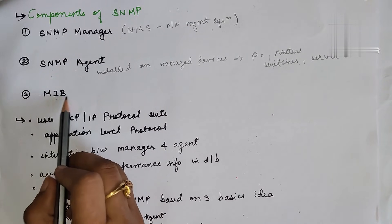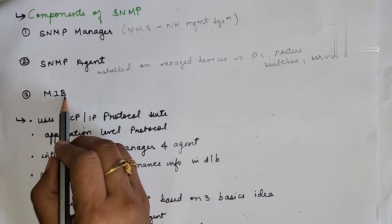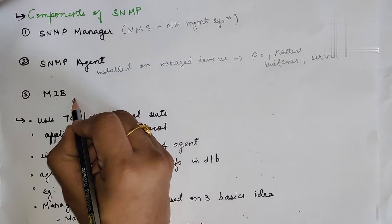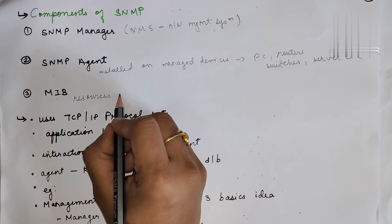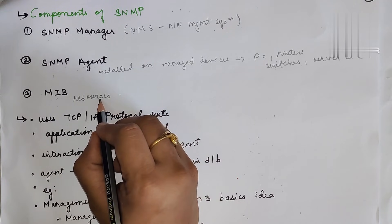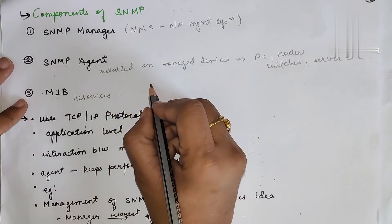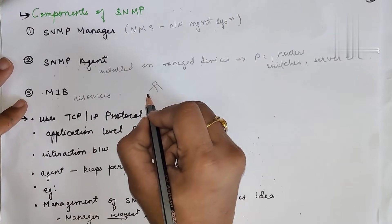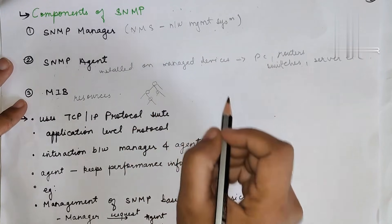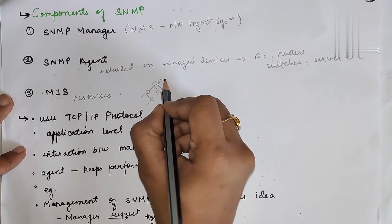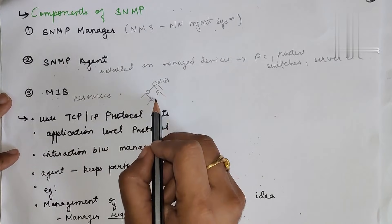The third component is MIB, that is the Management Information Base. We require this to track the resources. It contains all the information required or used by the resources for managing them, and it always uses a hierarchical structure to organize the information.